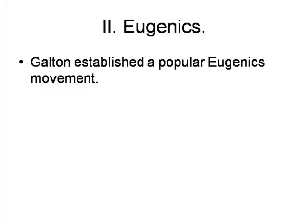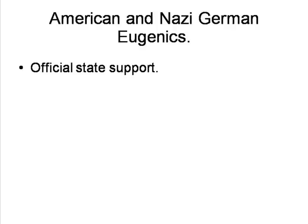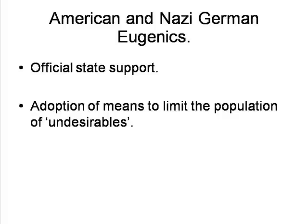Galton also left funds to establish a professorship in eugenics at University College. In later years, eugenics was enthusiastically adopted as an actual practice, rather than really as a social philosophy, in both the United States and in Nazi Germany. American and Nazi-German eugenics had a number of major differences from the original ideas of Galton and the British eugenicists who continued to uphold them. Firstly, Galton's ideas never gained official support in Britain, whilst they did in the United States and Germany. Secondly, in the United States and Germany, state support included the adoption of means to limit the population of those deemed undesirable — that is, negative eugenics.